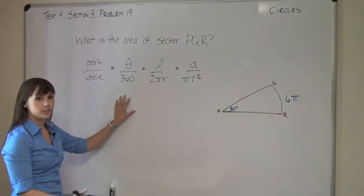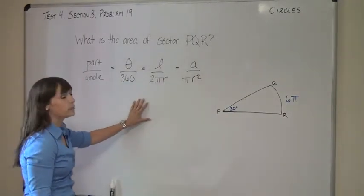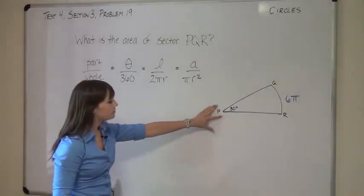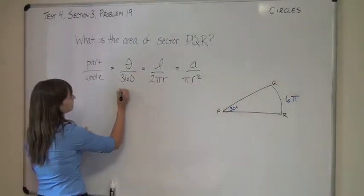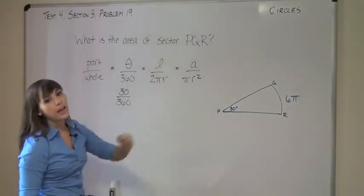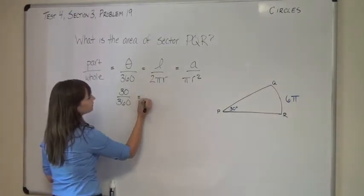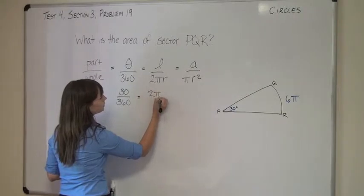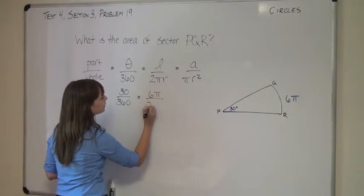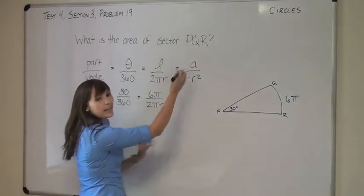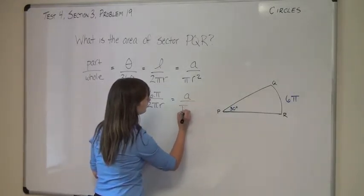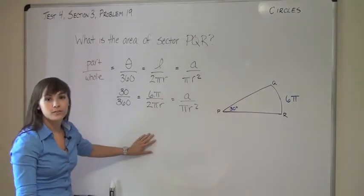Alright, now that we have our three ratios set up and set equal to each other, we can start filling them in with information from the problem. The information we're given is the angle associated with the sector, 30 degrees, and the arc length associated with the sector, 6π. Finally, A, the area of the sector, is what we're solving for.